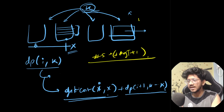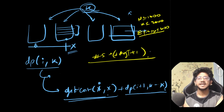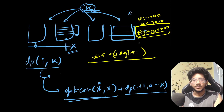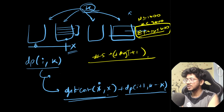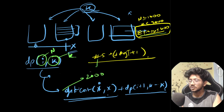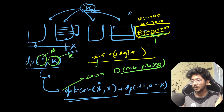N is up to 1000, K is up to 2000, and there's another constraint: sum of pile sizes is up to 2000. That sum-of-pile-sizes constraint is what makes the question solvable. In a naive analysis, states can be N × K, and transitions can be up to 2000 (pile size), giving O(N × K × pile_size). But with this constraint, optimizations kick in.